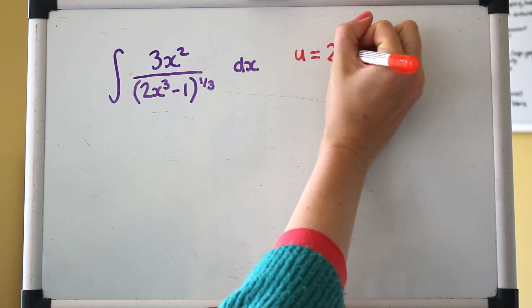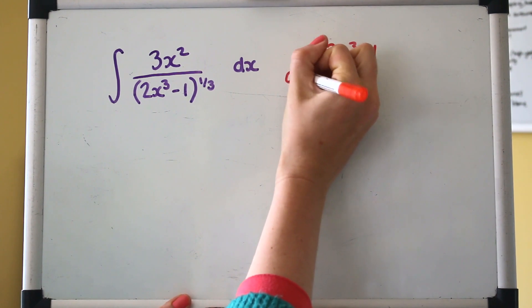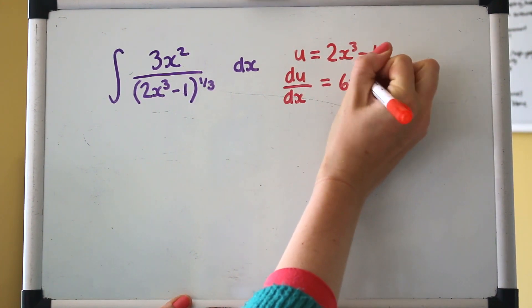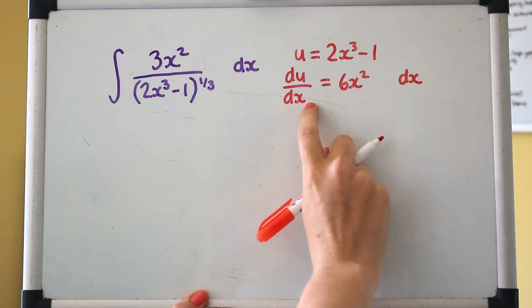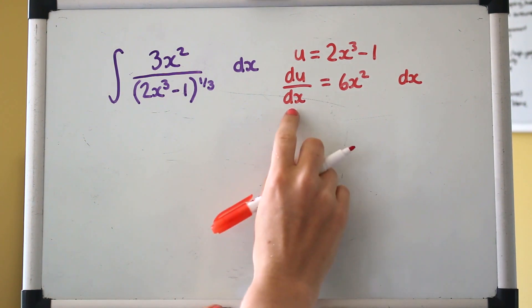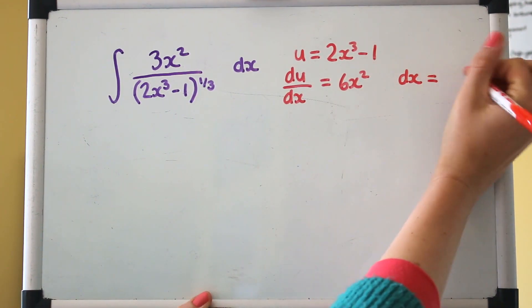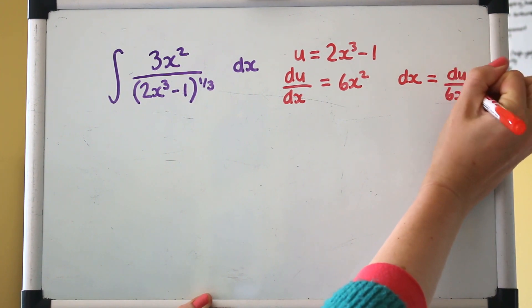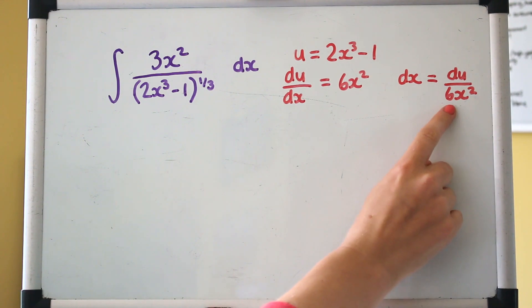So we're going to use that as our substitution. Generally we use the letter u. So u is that, and the first thing to do is to differentiate that. So we'll get du/dx equals 6x². And then by the side of that, what I like to do is rearrange to get dx as the subject. So I'm going to treat du/dx as a fraction here, multiplying dx up and putting the 6x² down. I'll write it this way round.